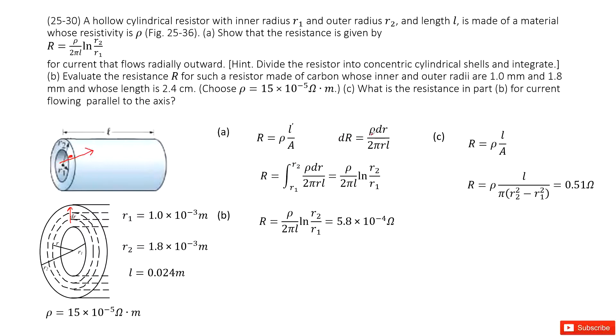And so the resistance for this small fraction is dR, the capital R. This small fraction of resistance equals ρdr divided by 2πRL.